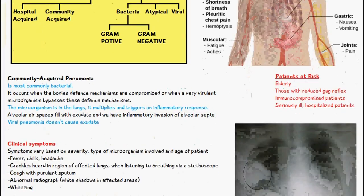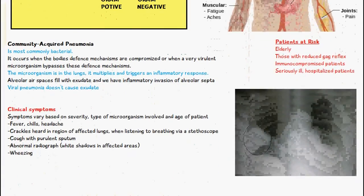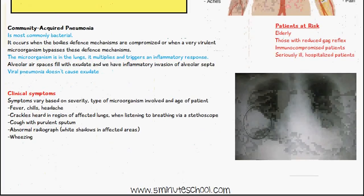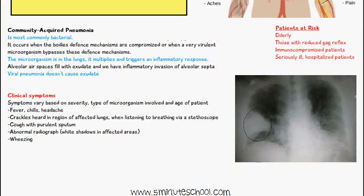The clinical symptoms of pneumonia will vary based on how severe the infection is, the type of microorganism involved, and the age of the patient. The patient is going to have fever, chills, and headaches, and crackles — also known as rales — will be heard in the regions of the affected lungs.